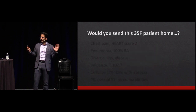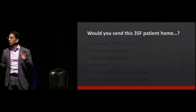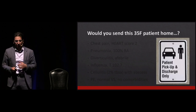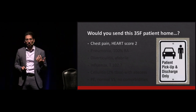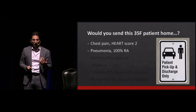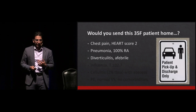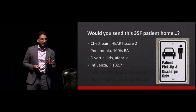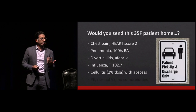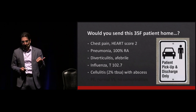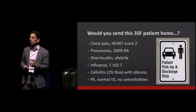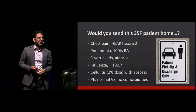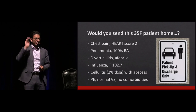You're in the ED, you see a 35-year-old female. Are you going to send the following people home? Consider what we think of as high risk and low risk. Chest pain patient, 35 with a heart score of two — probably sending home. Pneumonia patient at 100% room air? Probably. Diverticulitis, afebrile? Probably. Influenza — temperature could be 104 and you'd probably still send them home. Cellulitis with 2% total body surface area — yeah, probably, even with an abscess. But a PE with normal vital signs and no comorbidities — how many people have discharged PEs?